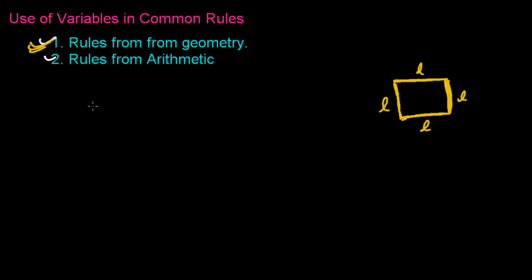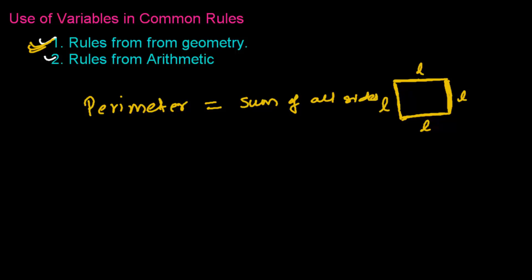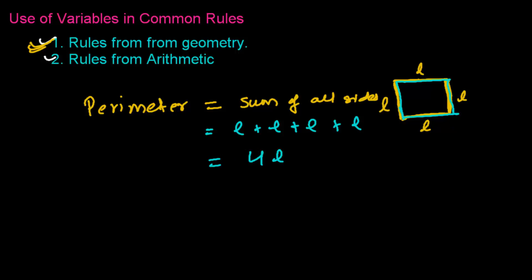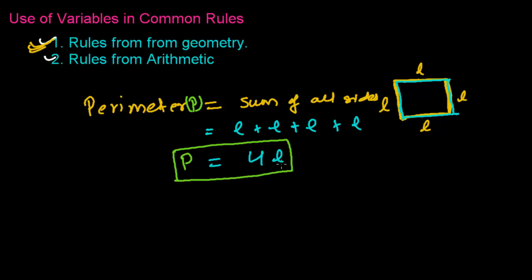Now I'm going to write the perimeter of this square. The perimeter is the sum of all sides. So we have L plus L plus L plus L, and altogether the perimeter is 4L. Let me give the name P to the perimeter. So the relationship is: perimeter P equals 4L. This is the relationship between the perimeter and the side L.